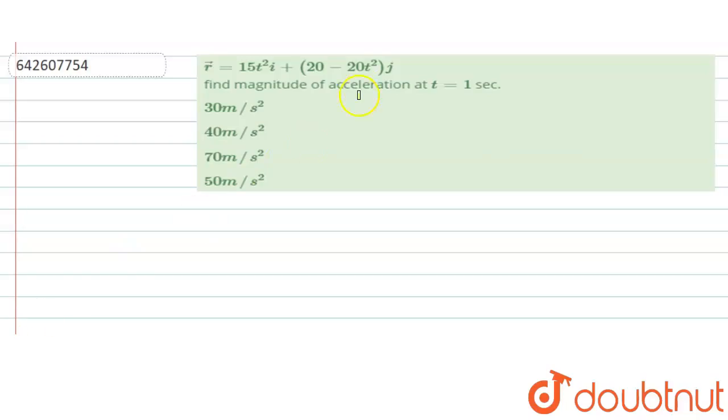Hello, the problem states that the position vector r is given by 15t² î + (20 - 20t²) ĵ.